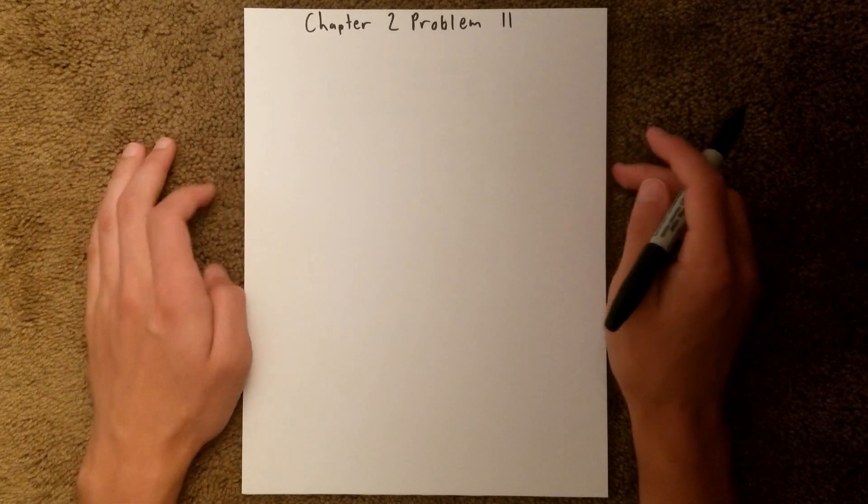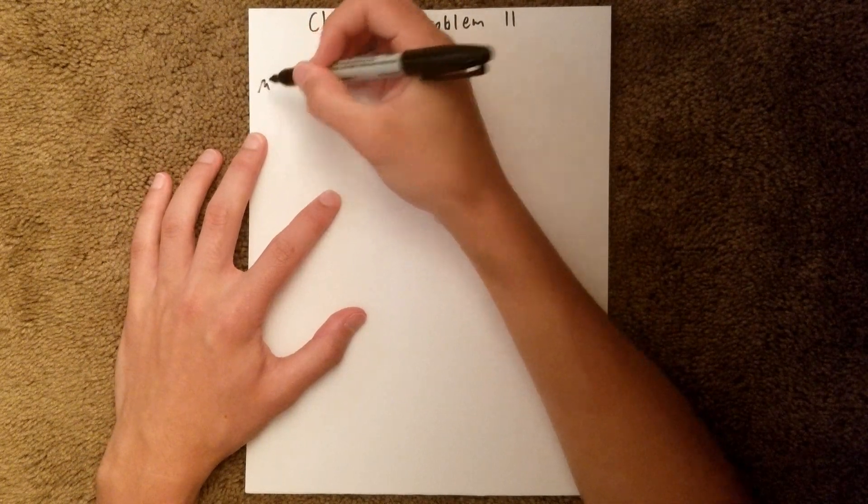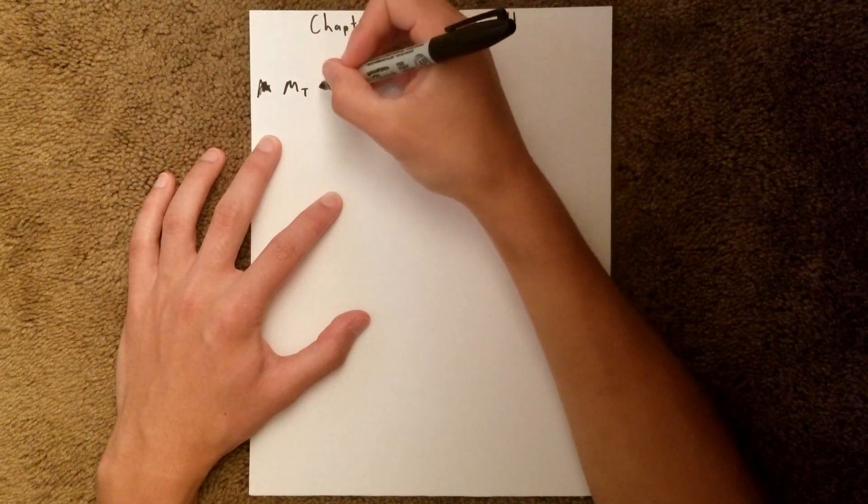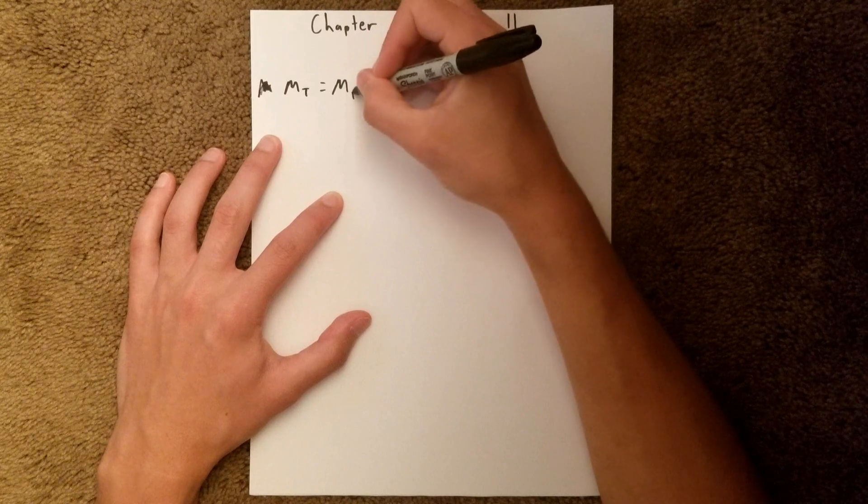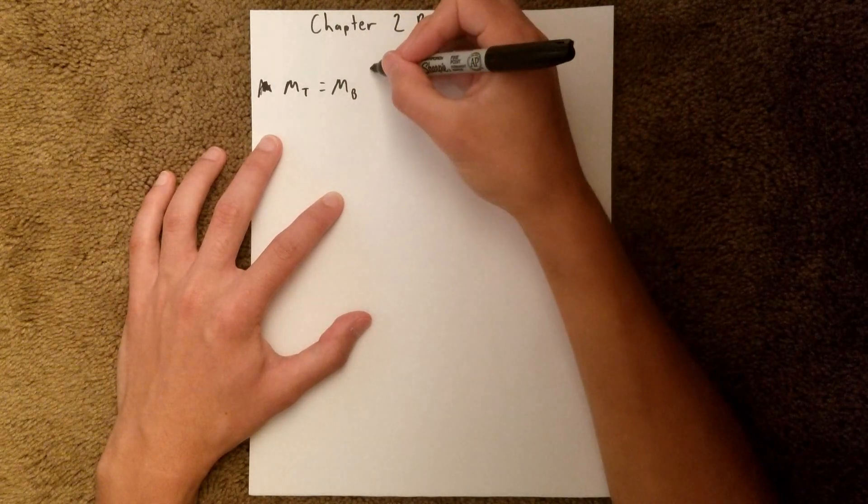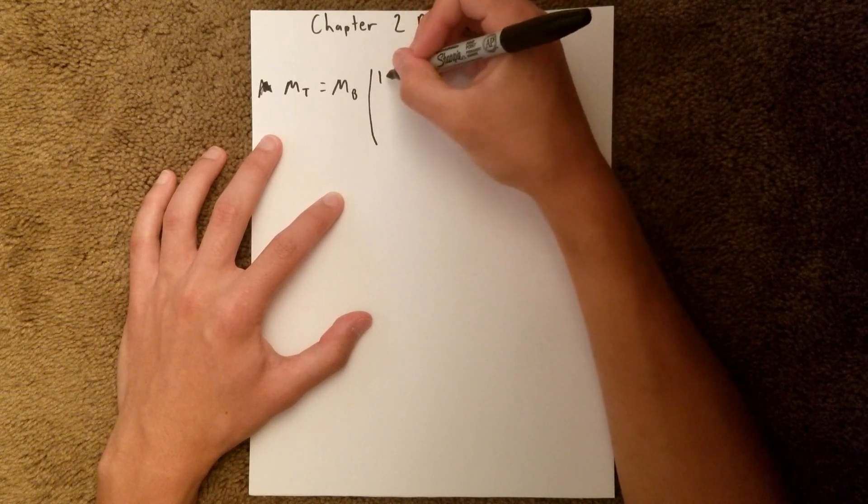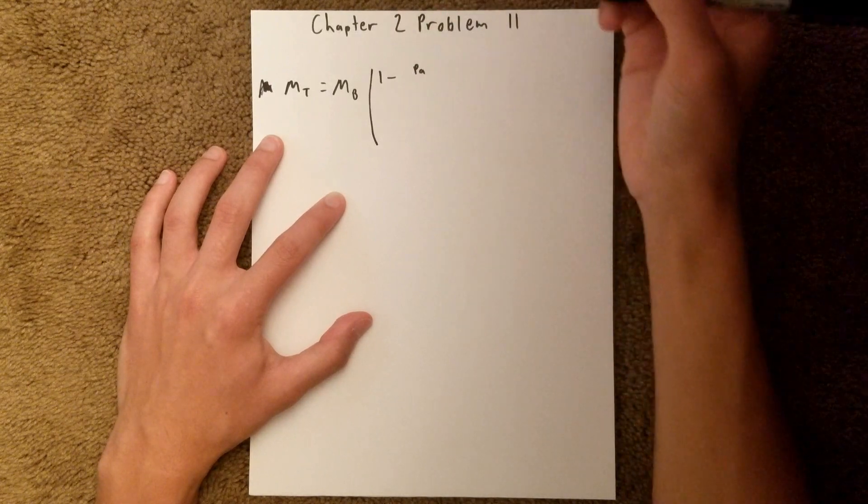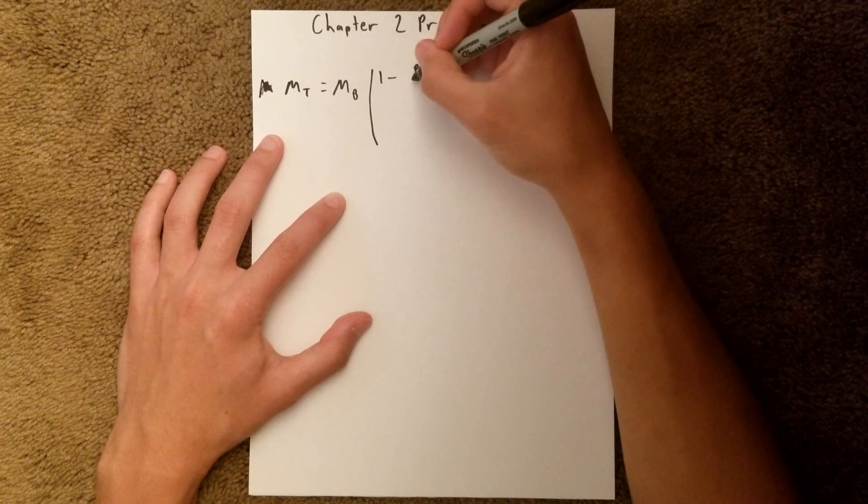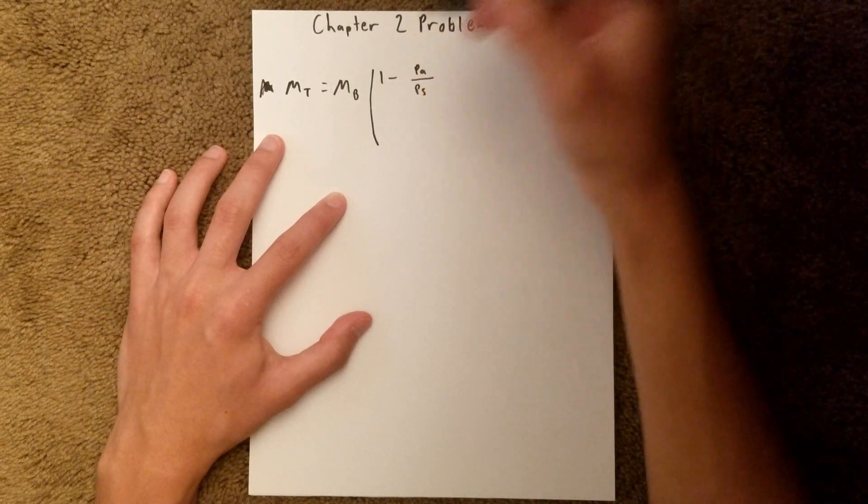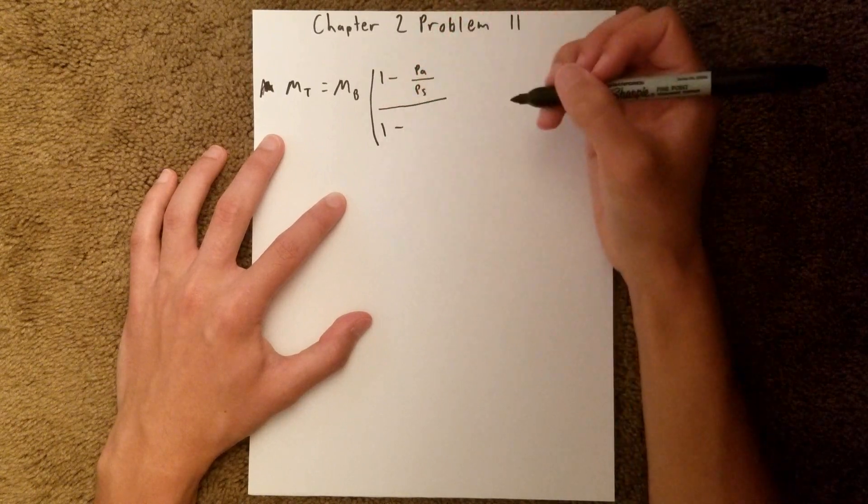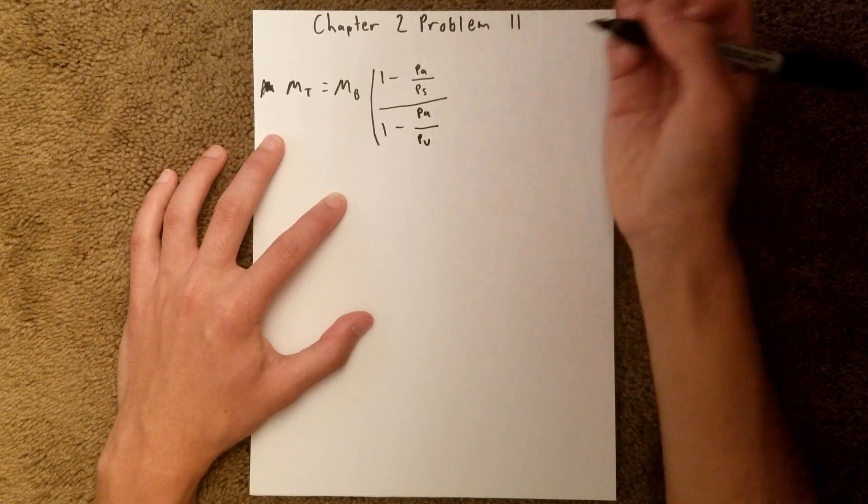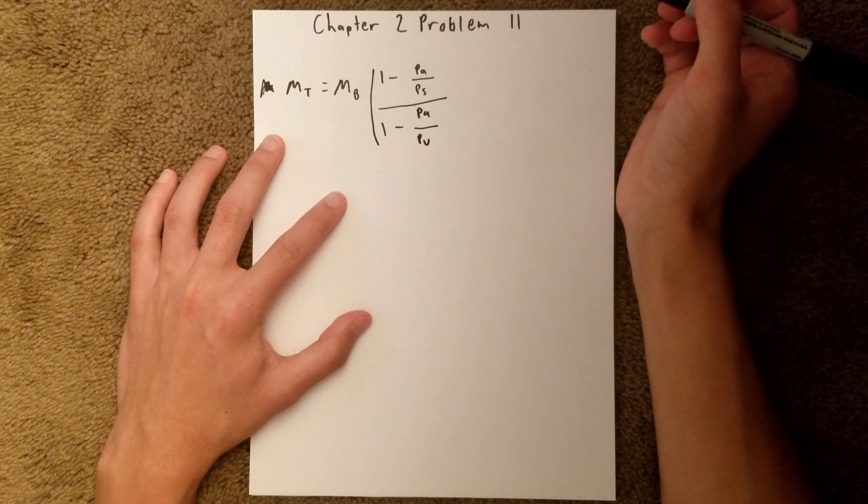The equation for buoyancy correction is your true mass equals your apparent mass, or the mass that would be read on the balance, times this huge fraction, which is 1 minus the density of air (this P symbol is a rho, a Greek letter rho, which stands for density) over rho standard, so some standard density, over 1 minus density of air over the density of your unknown, or the density of your chemical, in this case, the density of cesium chloride.